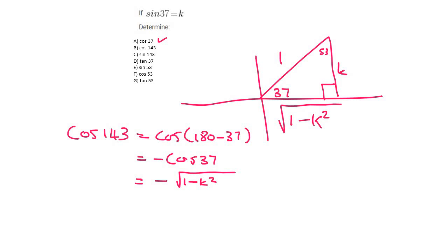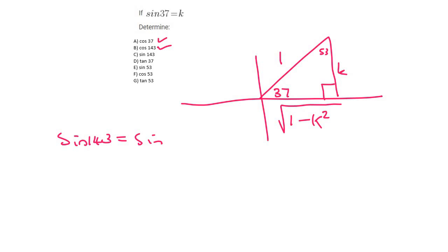Question c is sin 143. So that must be reduced as sin 180 minus 37. Sin is positive in that quadrant—that's quadrant 2—and so it's just sin 37. Now you can get the answer off your triangle, but what you could do is just see there that sin 37 is k.